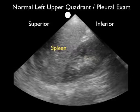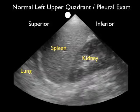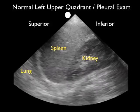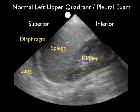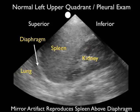Now let's take a look at a normal left upper quadrant pleural exam. Again, we're in a long axis configuration, so superior to the left and inferior to the right. We see the spleen in the middle of the image, and we see the diaphragm moving up and down as the patient breathes. Looking above the diaphragm into the thoracic cavity, we again see that mirror artifact — it looks almost like a reproduction of the spleen within the thoracic cavity. This is a normal finding and is not to be confused with fluid. Fluid will appear very differently, with the appearance of a dark or anechoic stripe right above the diaphragm.